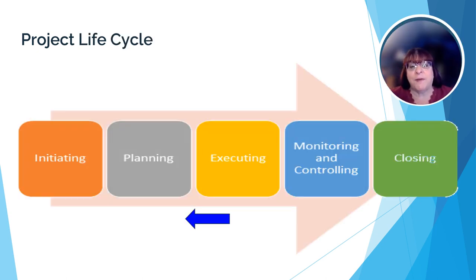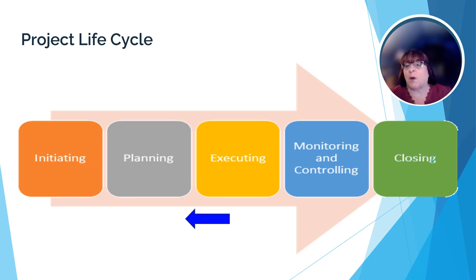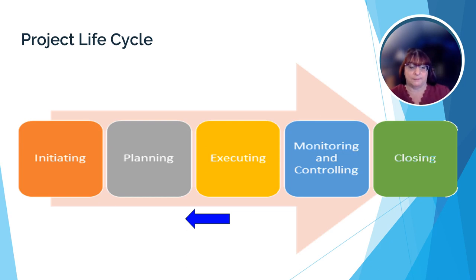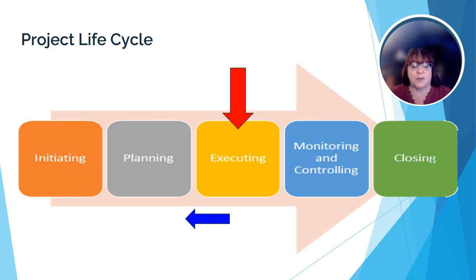Remember this graphic from the Unit 2 review? As we noted in Unit 3, we're going to be seeing this over and over in the next few units as we look at each of the five processes of the project lifecycle: initiating, planning, executing, monitoring and controlling, and closing. So in this unit, we're looking at the execution phase — executing the project.